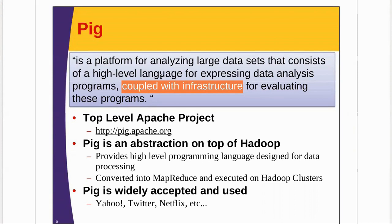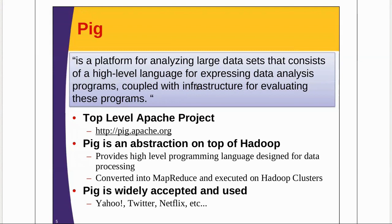PIG is a technology for analyzing large data sets that consists of a high-level language — you can see it as a query language. In that query language you write PIG scripts, which are run on the PIG infrastructure — the same infrastructure used to run MapReduce applications. PIG is a level of abstraction on Hadoop; if Hadoop is not there, you cannot run PIG Latin scripts. The infrastructure required to run your PIG scripts is Hadoop.